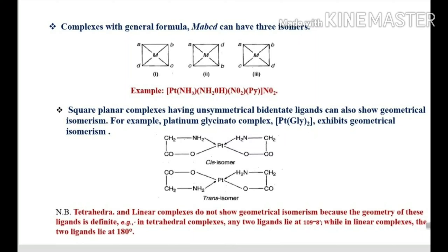Complexes with the general formula MABCD will have three geometrical isomers. An example is the platinum complex Pt(NH3)(NH2OH)(NO2)(py). Square planar complexes with unsymmetrical bidentate ligands can also show geometrical isomerism — for example, the platinum glycinato complex Pt(gly)2 exhibits cis and trans isomers.